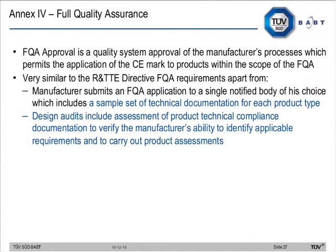The third conformity assessment procedure is full quality assurance under Annex 4. The general principles are very similar to the R&TTE directive. FQA is a quality system approval of the manufacturer's processes, permitting the application of the CE mark to products within the FQA scope. The difference from the R&TTE directive is that when the manufacturer submits his application, he must include a sample set of technical documentation for each product type, and design audits must include an assessment of product technical compliance documentation to verify the manufacturer's ability to identify applicable requirements.